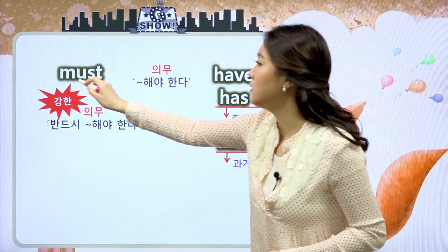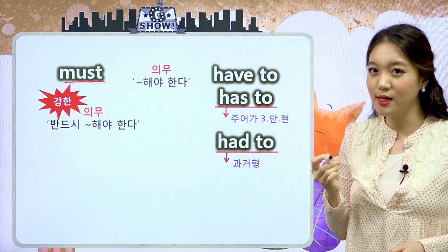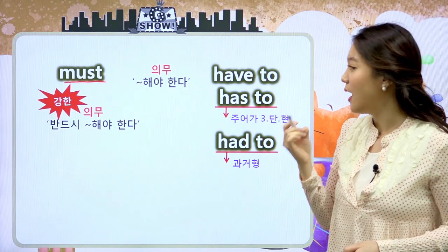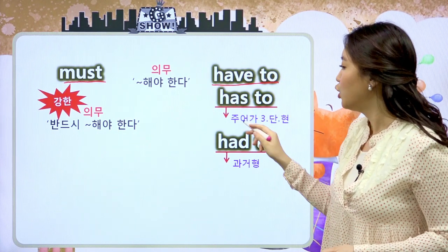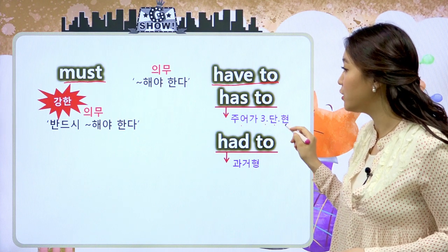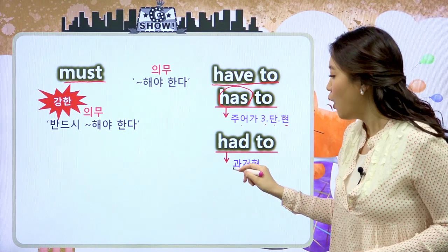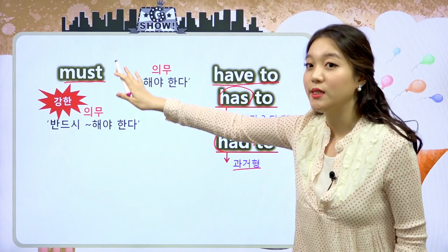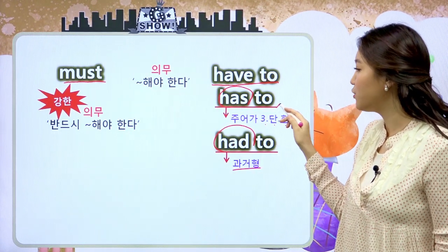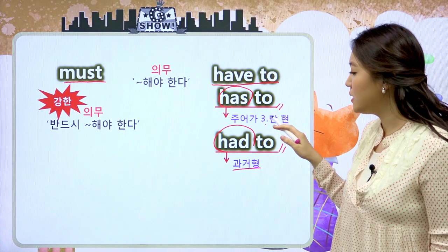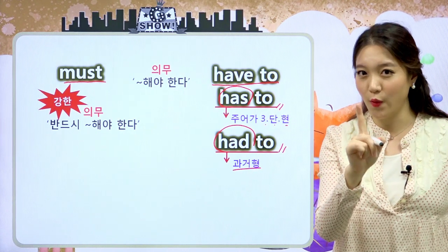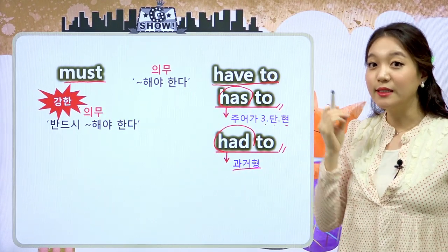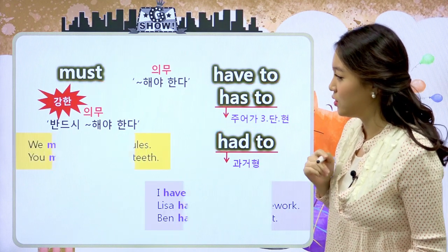또 하나 있습니다. must는 3인칭 단수 현재라고 해서 그 형태가 변하지 않고 과거라고 해도 그 형태가 변하지 않아요. 그런데 have to는 주어가 3인칭 단수 현재일 경우 has to로 바뀌고요. 과거형일 경우에는 had to로 바뀌어요. must는 변하지 않는다, have to는 인칭이나 시제에 따라서 바뀐다. 굉장히 중요한 키포인트고요. must가 조금 더 강한 뜻이 있다라고 이렇게 그 느낌을 받아들여주시면 돼요.